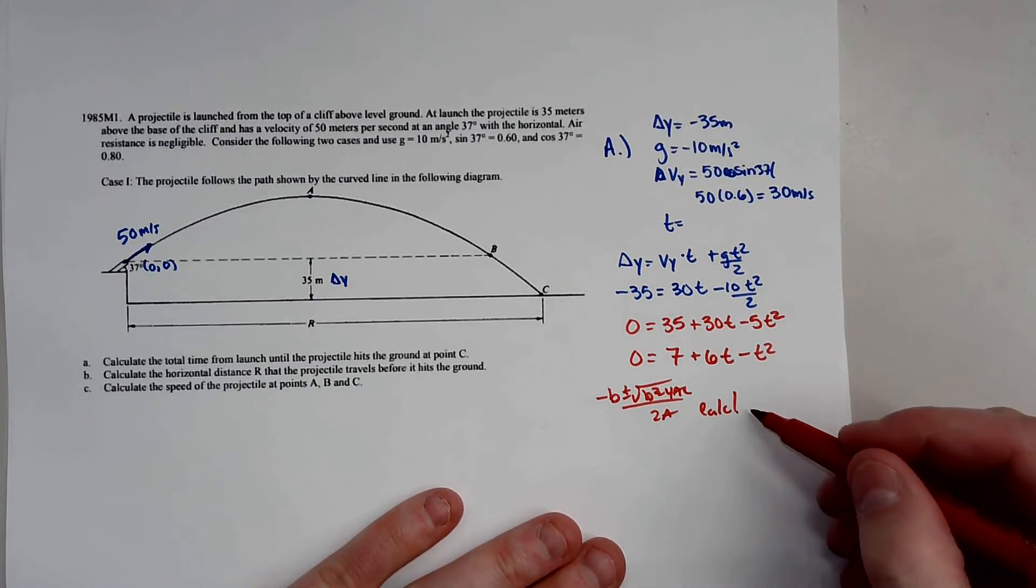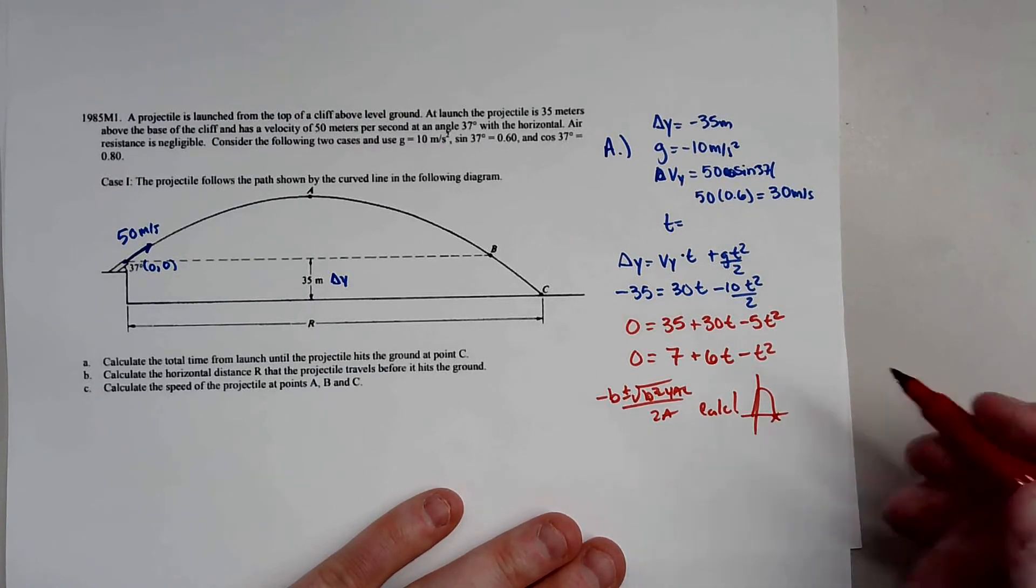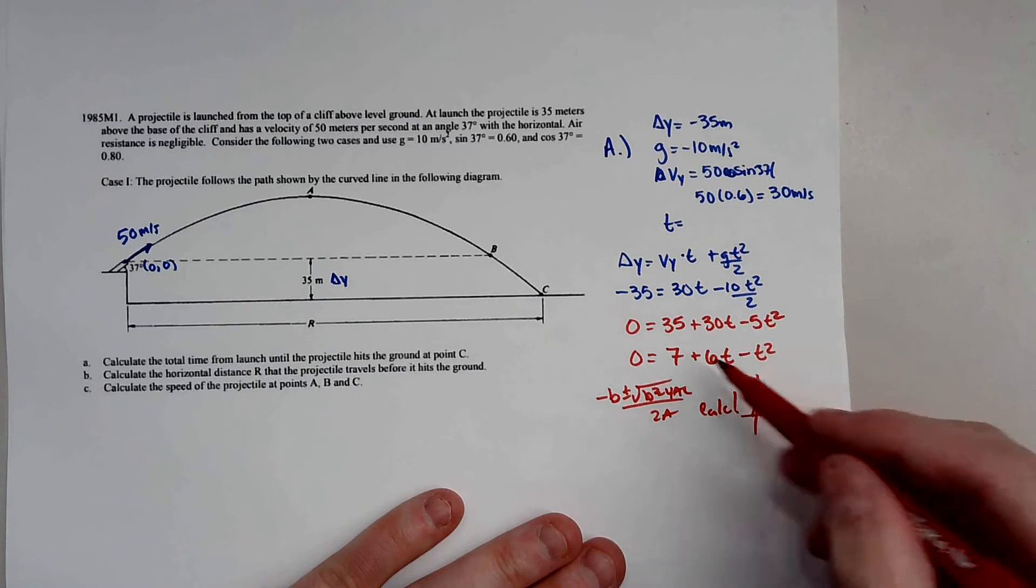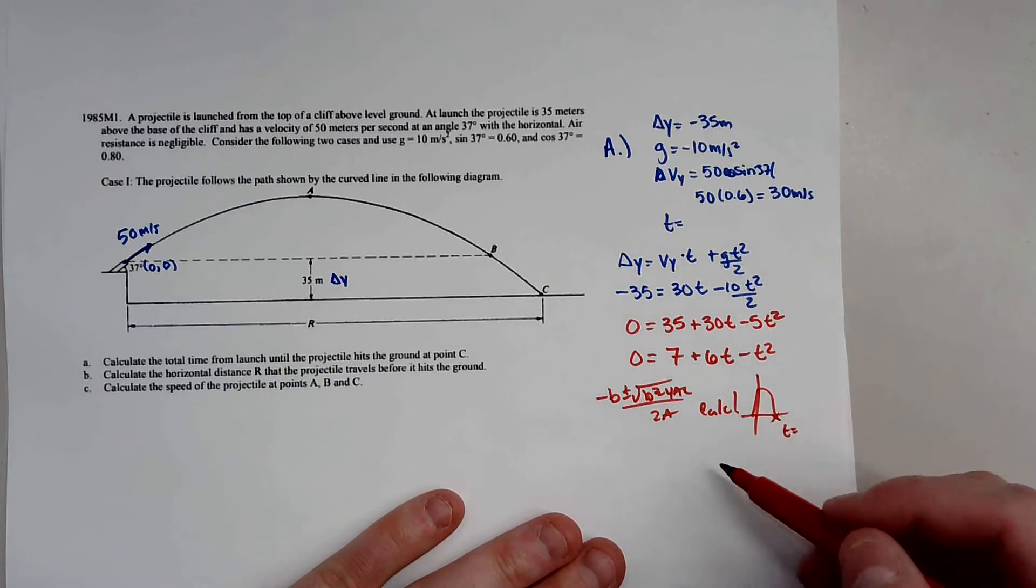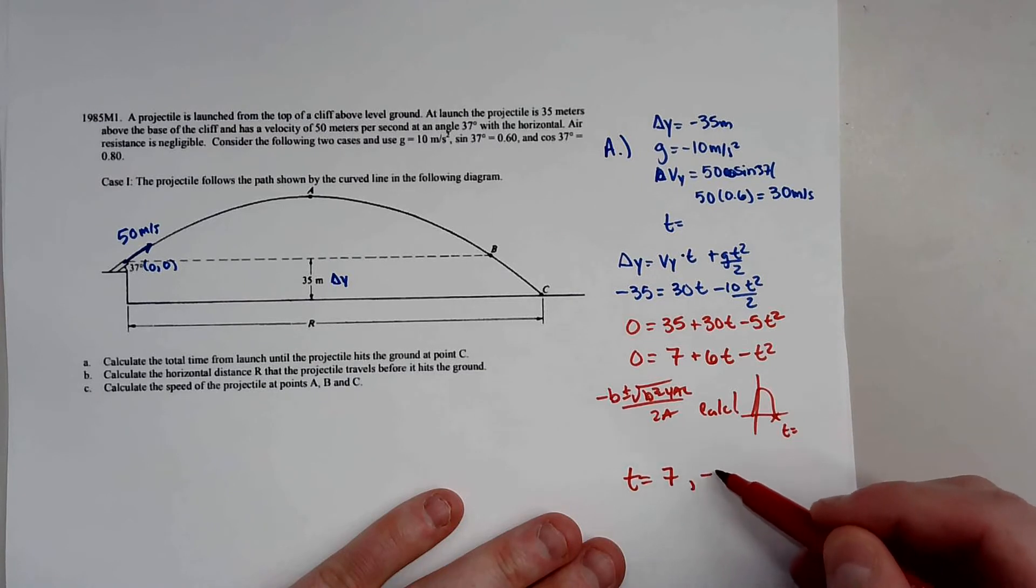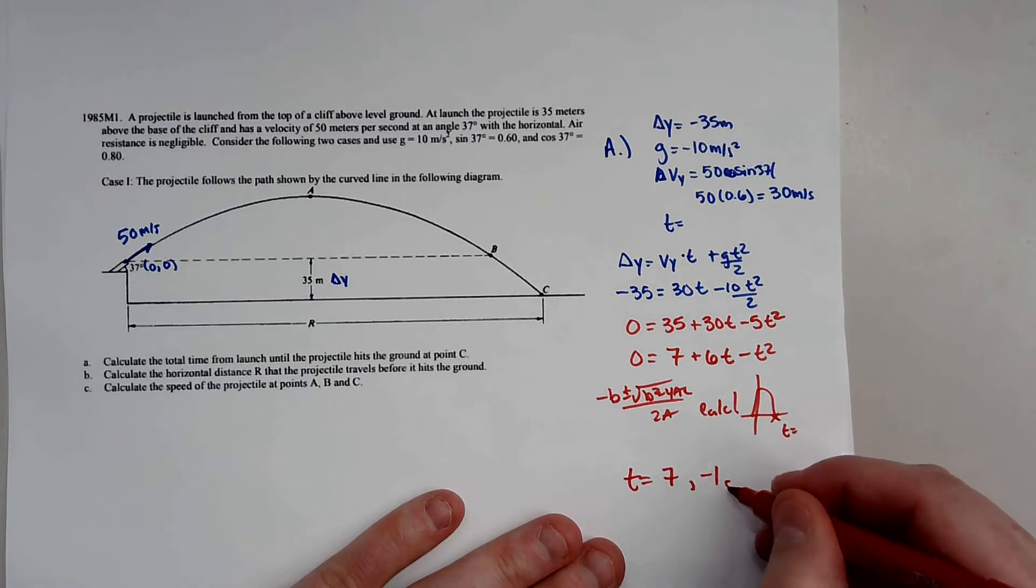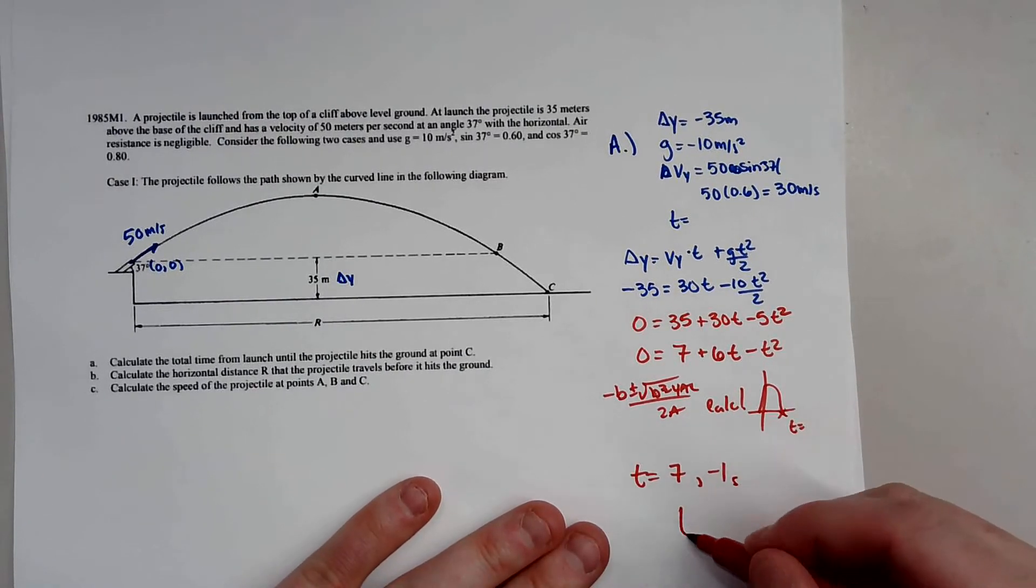So you can plug this into your calculator, you can graph it, find out where it crosses the x-axis, and get your time from that. Or, if you're lucky like this, this actually does factor. And our times for this are going to be 7 and negative 1. So you can factor this out. And obviously, when you fire this projectile, it's not going to go negative 1, it's not going to go back in time. So the proper time for A would be 7 seconds.